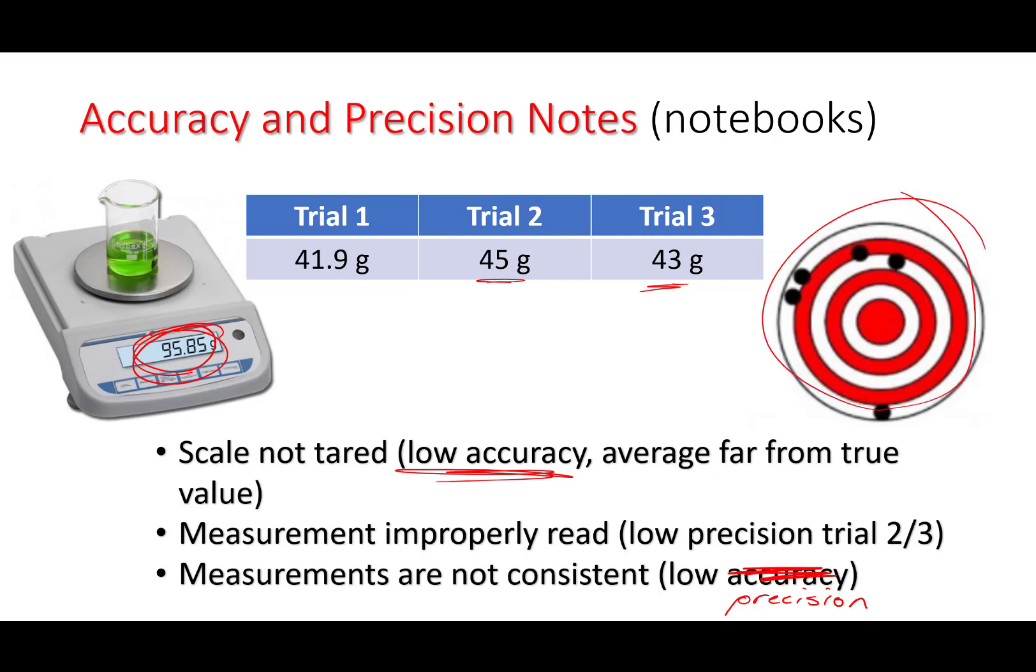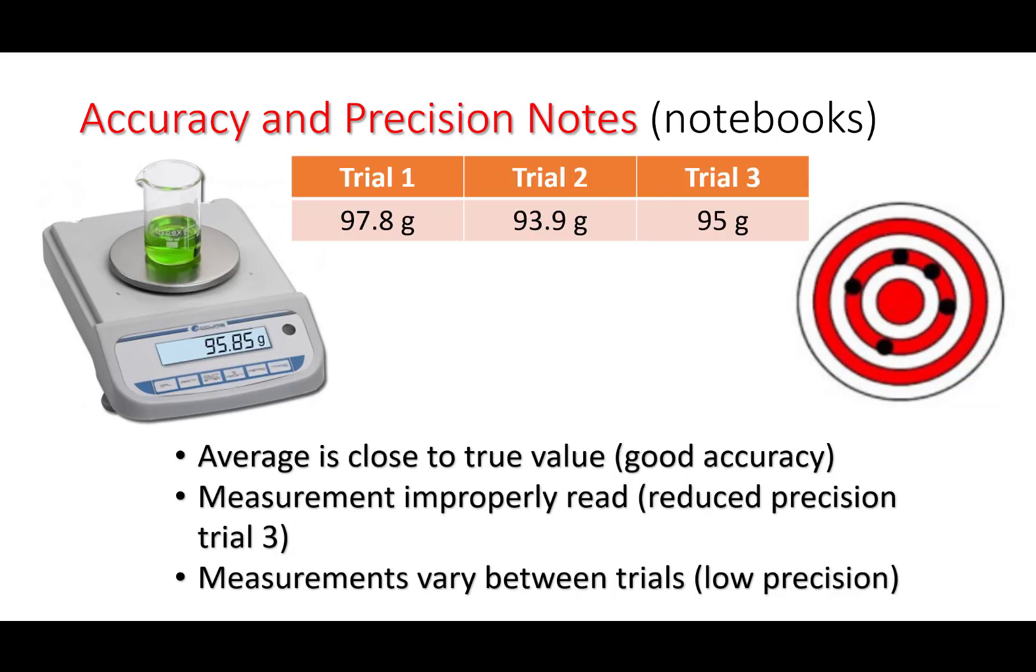Here we have three trials: 97.8, 93.9, 95 grams. These are going to be accurate measurements because if we take an average, that average is going to be very close to the true value. At least relatively accurate. However, these are not precise because they do vary a good amount by a few grams in each trial. So they're not very repeatable. And not only that, the measurements are improperly read. We're not using the correct number of sig figs in any of these measurements. There should be four sig figs on all of these measurements.